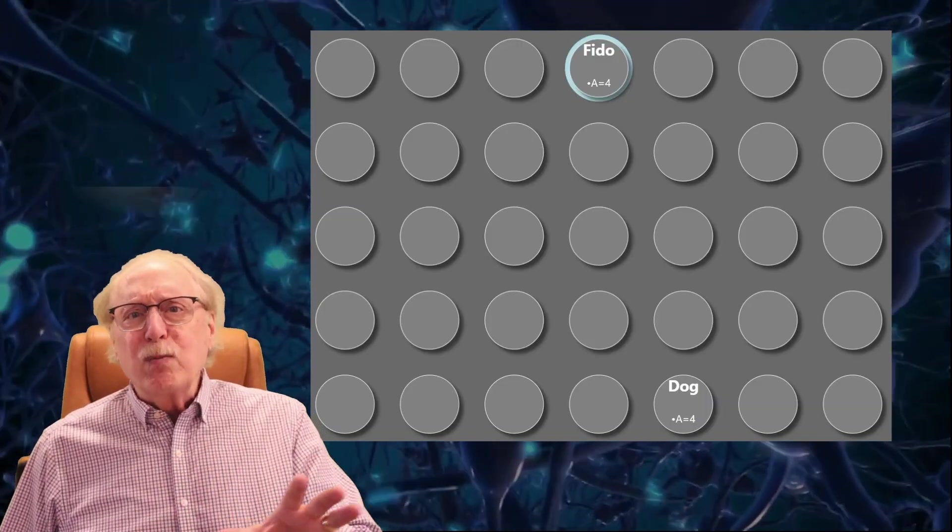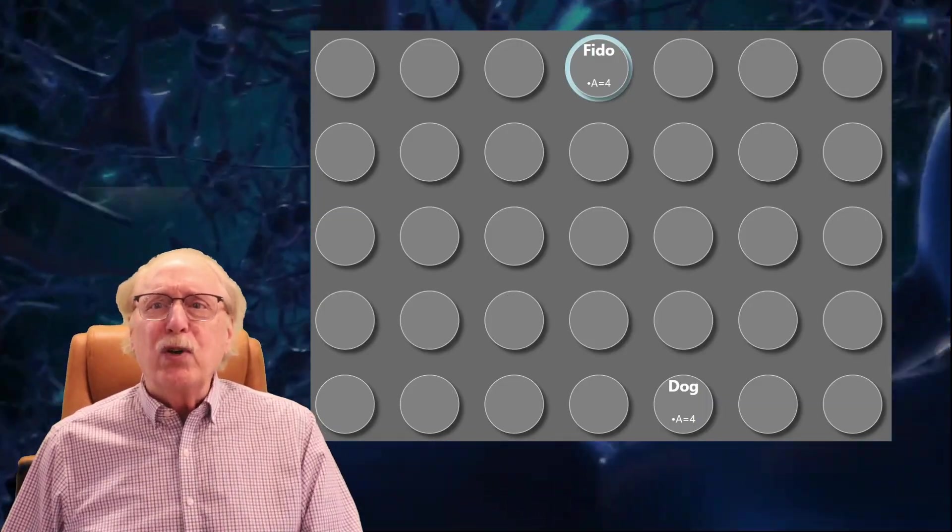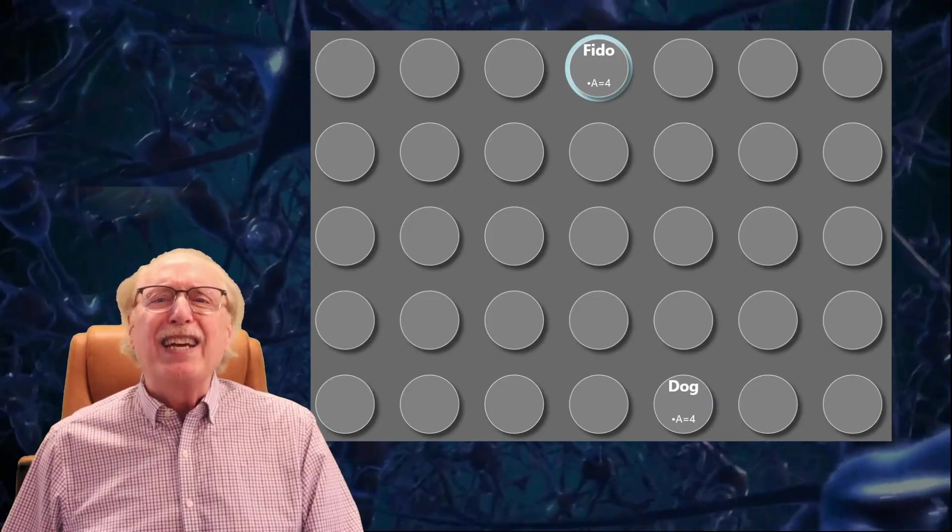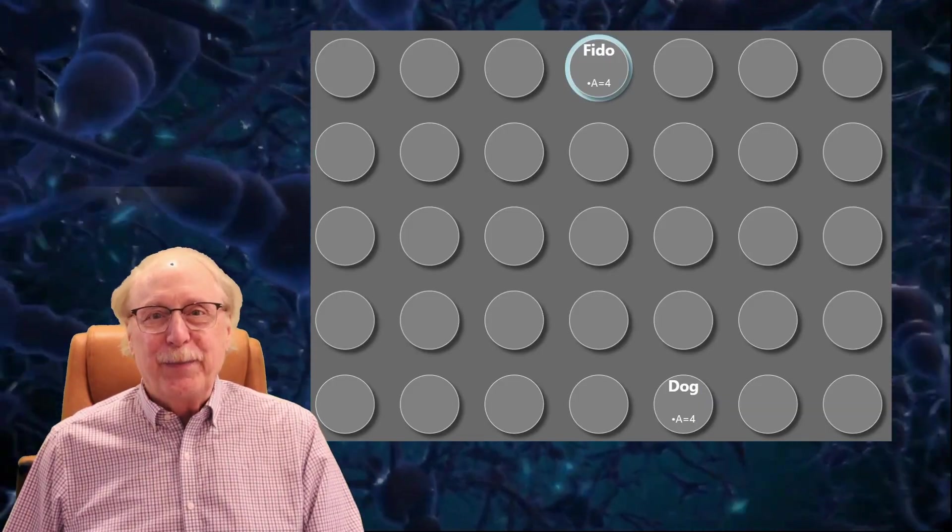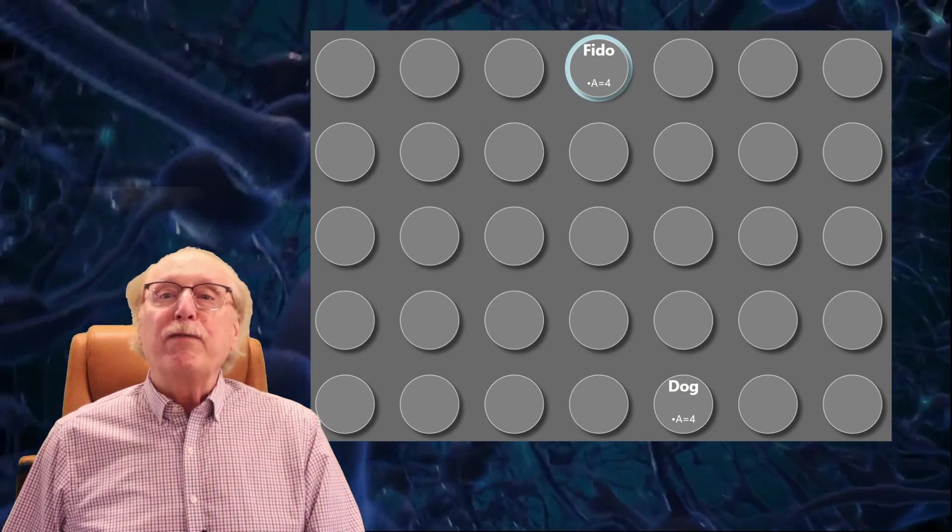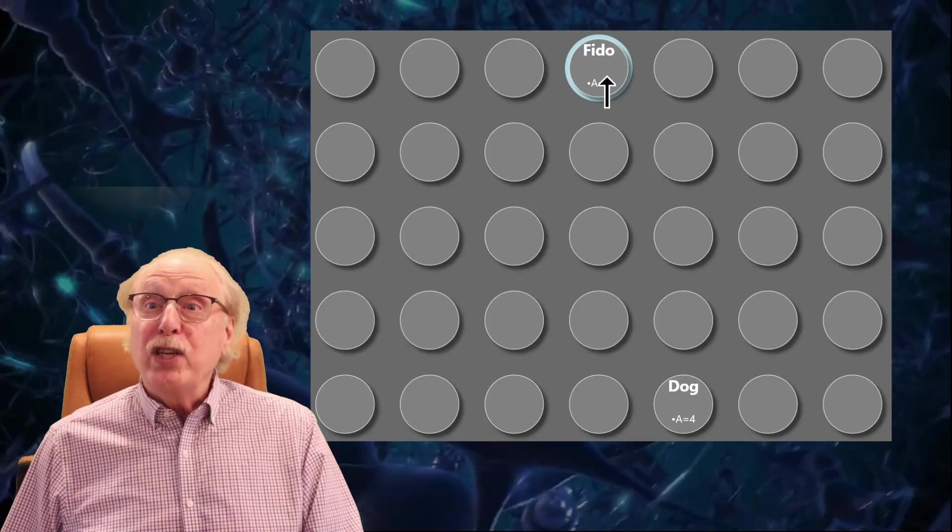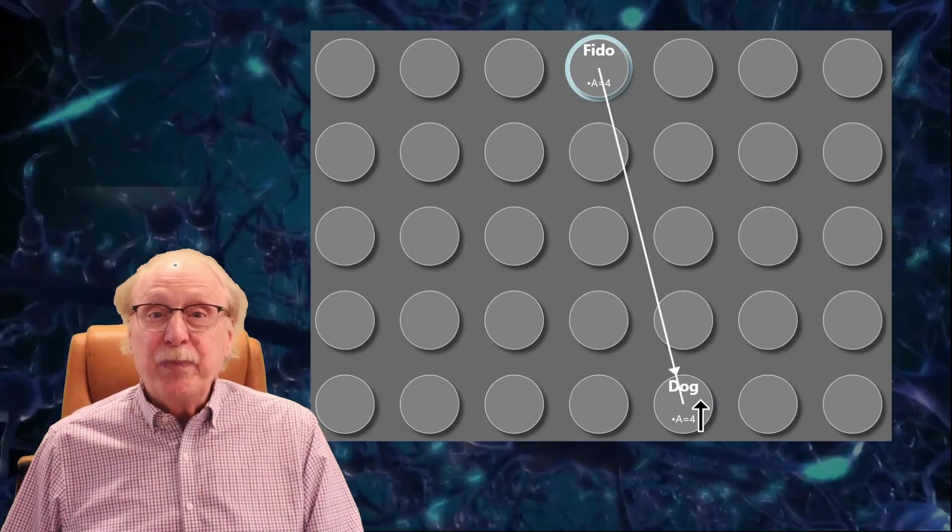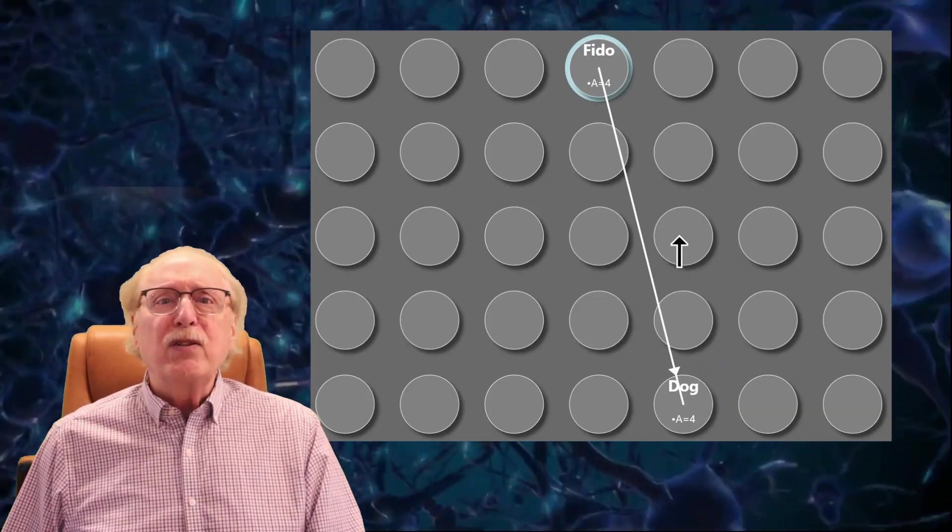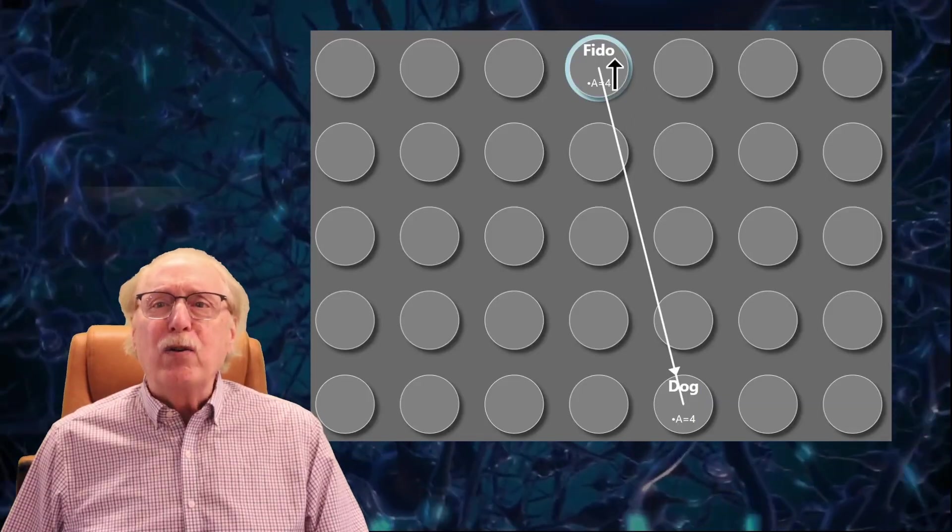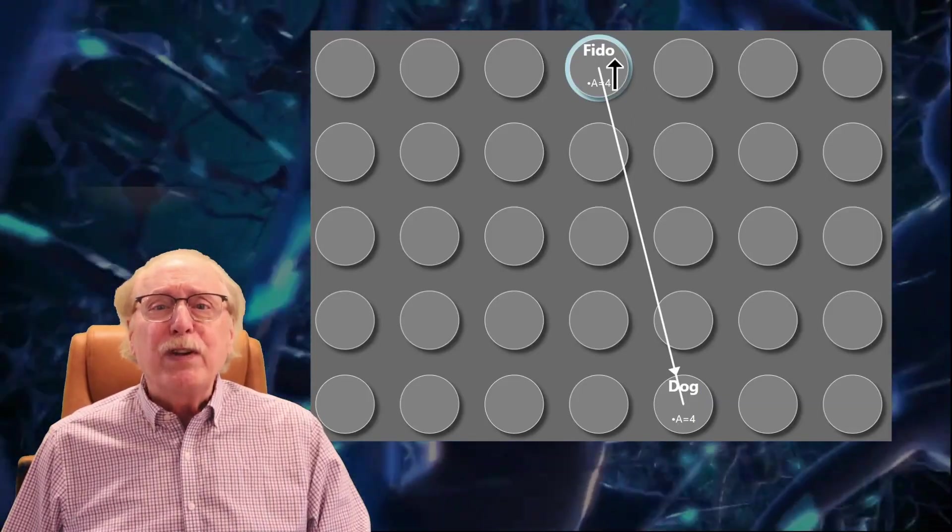Notice that I've left some space between the Fido and Dog neurons because I'll be adding a lot of cool stuff in there. To represent Fido as a dog, we'll start by adding a synapse between the two neurons with a synapse weight of one. Here's why this single synapse doesn't represent Fido as a dog and what we need to do to fix it.